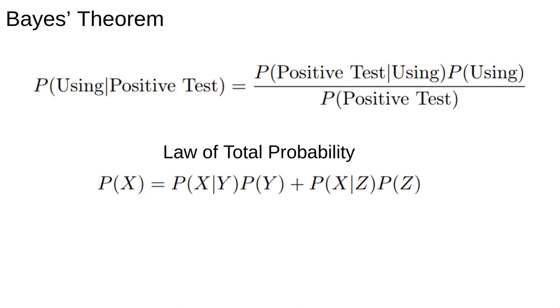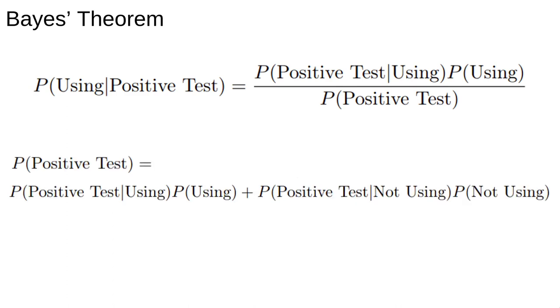To calculate the denominator, we need the law of total probability. This says the probability of X happening is the probability of X given Y times the probability of Y, plus the probability of X given Z times the probability of Z, where Y and Z are assumed to be the only two possible outcomes. In our case, the law of total probability says that the probability of a positive test is the probability of a positive test if they're using times the probability they're using, plus the probability of a positive test if they're not using times the probability of not using. Obviously, using and not using are the only two possibilities.